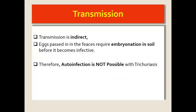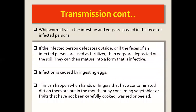Transmission is basically indirect. As opposed to what we looked at in enterobiasis, the eggs are passed into the feces and then they require to go to the soil for embryonation to happen before they become infective. So auto-infection is not possible here, because embryonation has to occur in the soil first.